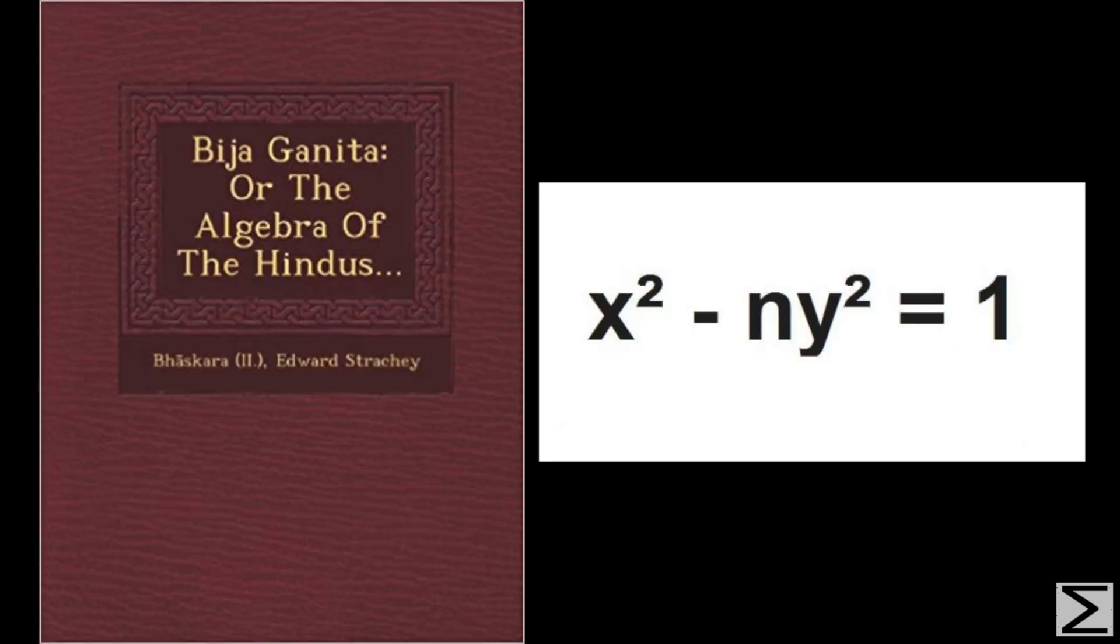Bhaskara also contributed to algebra. He looked at quadratic indeterminate equations, specifically equations of the form a times x squared plus b equal to c times y squared where a, b, and c are all constants. Specifically he looked at Pell's equation which is p times x squared plus one equal to y squared where p is a constant.